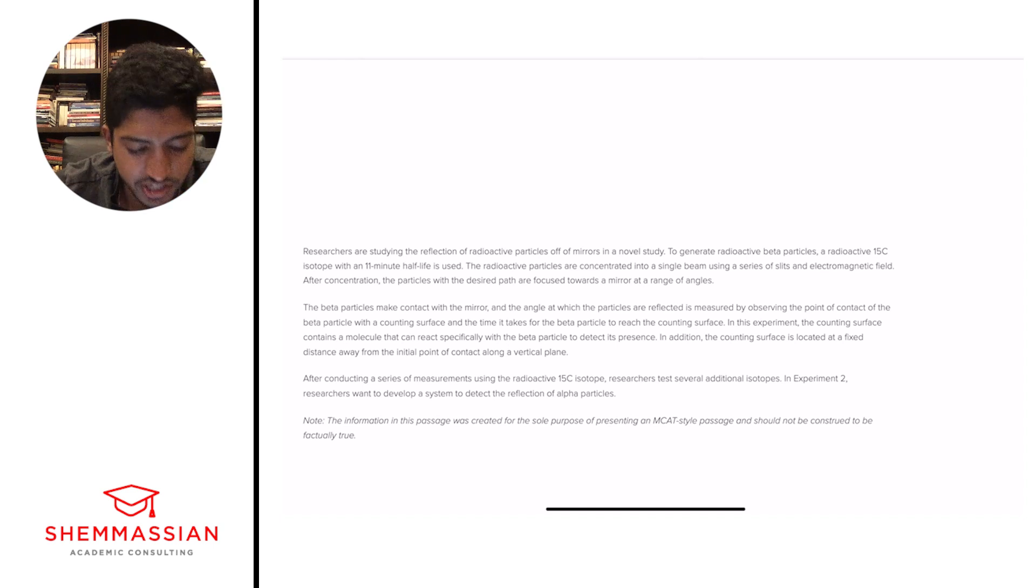Researchers are studying the reflection of radioactive particles off of mirrors in a novel study. To generate radioactive beta particles, a radioactive 15C isotope with an 11 minute half-life is used. The radioactive particles are concentrated into a single beam using a series of slits in an electromagnetic field. After concentration, the particles with the desired path are focused toward a mirror at a range of angles.